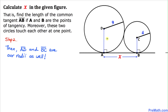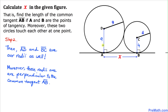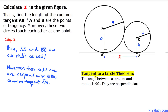We can observe that line segment AD is a radius of the bigger circle, so its length is 9 units. Line segment BC is the radius of the smaller circle, so its length is 4 units. According to the tangent-to-a-circle theorem, the angle between a tangent and a radius is always 90 degrees — meaning these two radii are perpendicular to the tangent line AB.